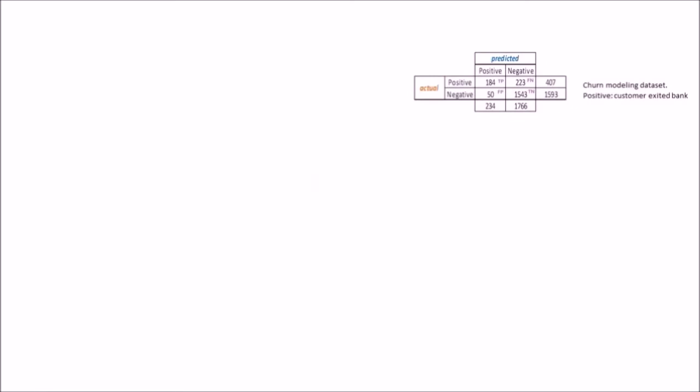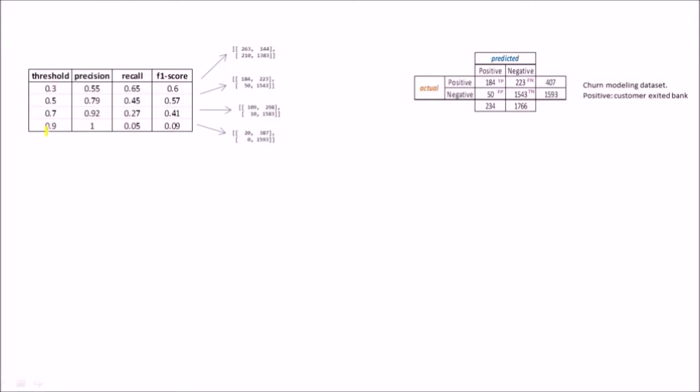We will be working with the same churn modeling dataset where the positive indicates that the customer left the bank and negative indicates that the customer did not leave the bank. For these four threshold values, I have these four confusion matrices and I can calculate the precision and recall for each of these confusion matrices.